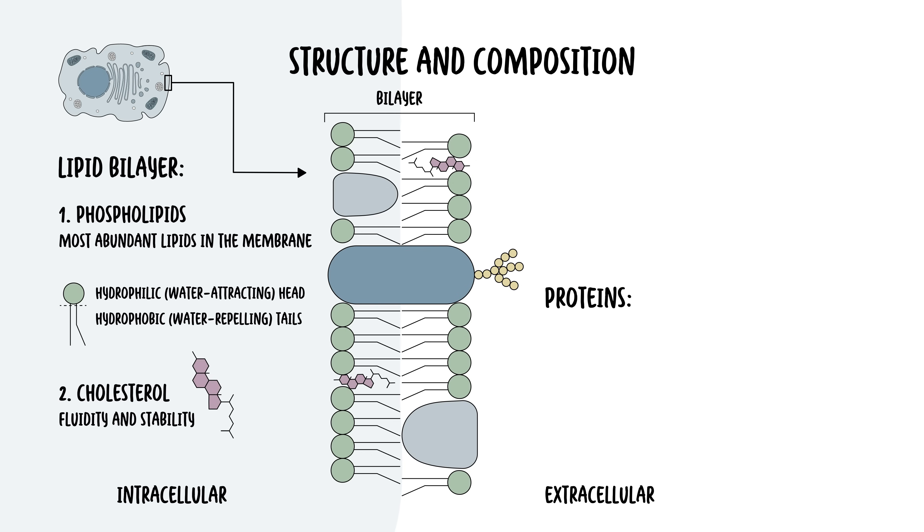Within the cell membrane, you also find proteins, which can be divided into integral proteins and peripheral proteins. Integral proteins are intrinsic proteins embedded within the lipid bilayer. These proteins often span the entire membrane called transmembrane proteins. These transmembrane proteins are involved in various functions such as transportation of ions or molecules, signaling such as receptors, and cell adhesion.